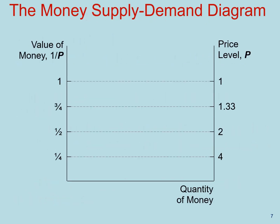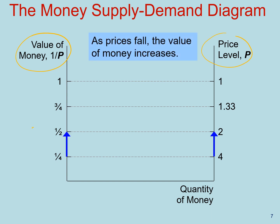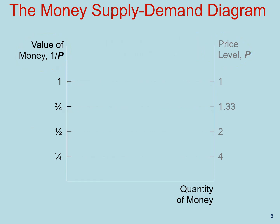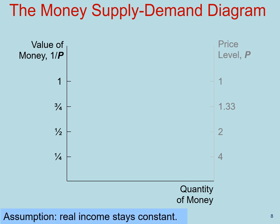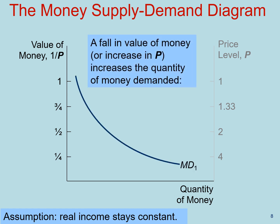Let's analyze a money supply and demand diagram. On the left-hand axis is the value of money, and on the right-hand side is the price level — they go in opposite directions, so as prices fall, the value of money increases. Money demand refers to how much wealth people want to hold in liquid form. Holding real income constant, an increase in the overall level of prices reduces the value of money, so more money is required to buy goods and services, increasing the quantity of money demanded. This shows a negative relationship between the value of money and the quantity of money demanded.